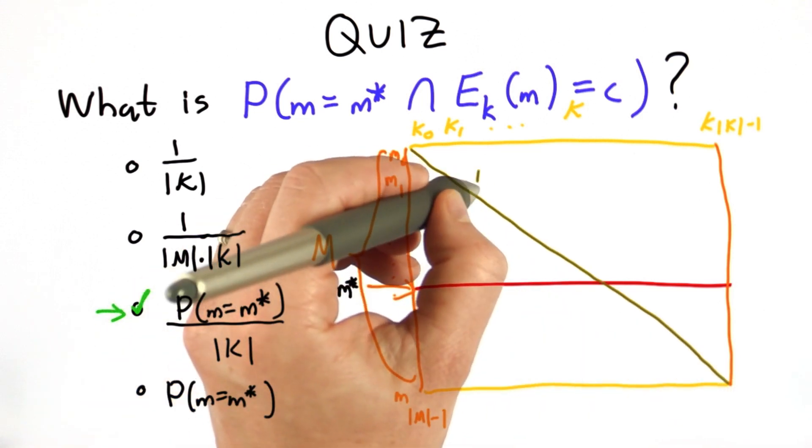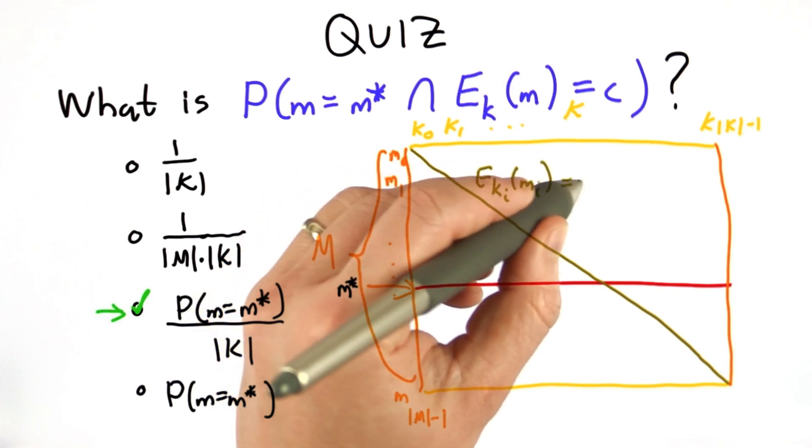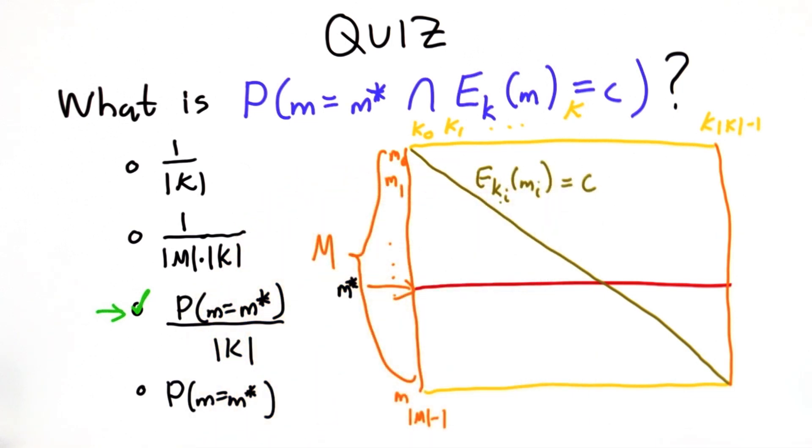This is the line where the encryption of ki and mi is equal to C. Depending on what C is, it might not be a diagonal line. But we can think of it that way, that there's one key that maps each message to each ciphertext. So that means there's exactly one point here where those two intersect.